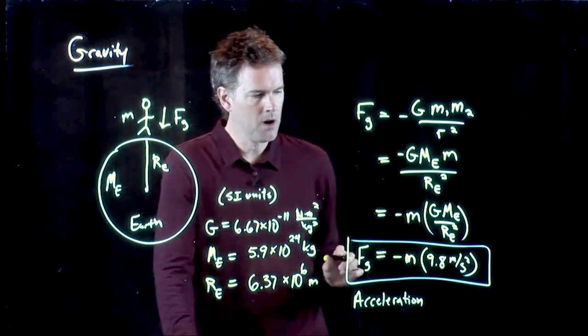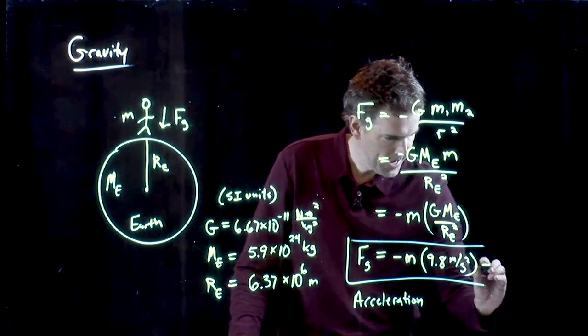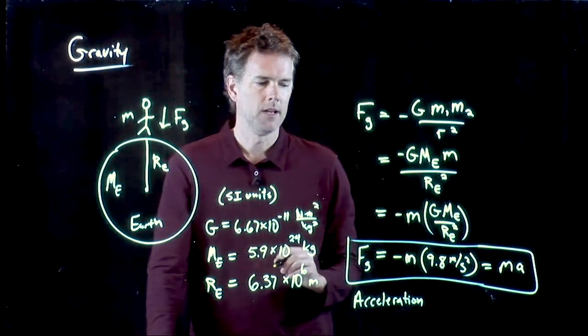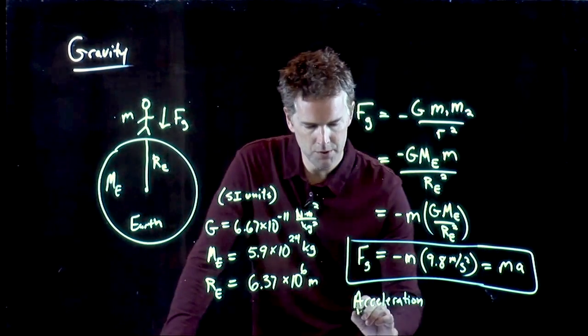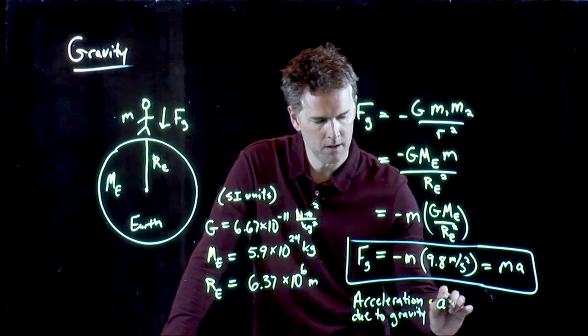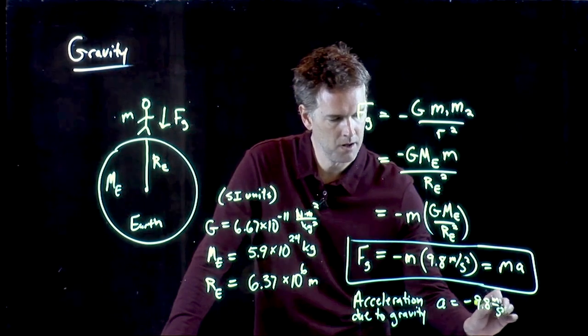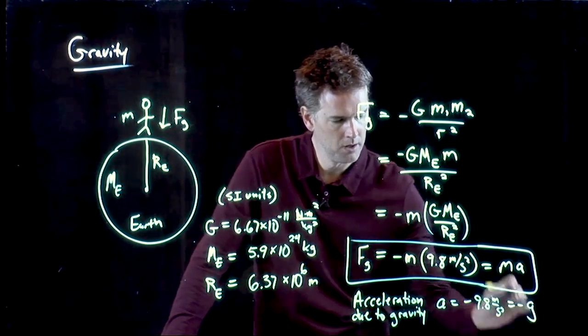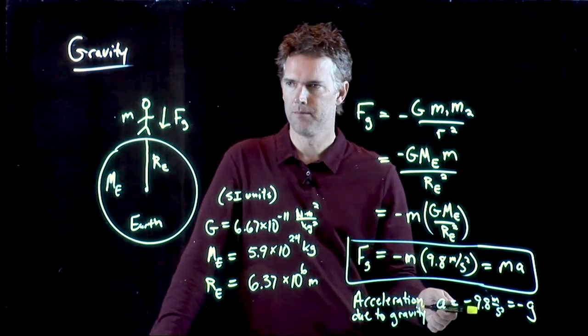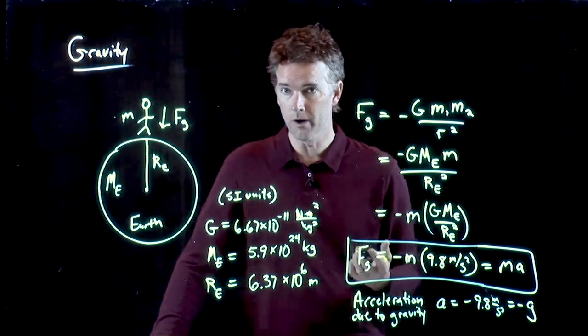What we know is that force has to be equal to mass times acceleration. And so the acceleration due to gravity at the Earth's surface is negative 9.8 meters per second squared, which is what we call negative g. That's where that 9.8 comes from. We've been hearing about 9.8 meters per second squared over and over. Where does it come from?